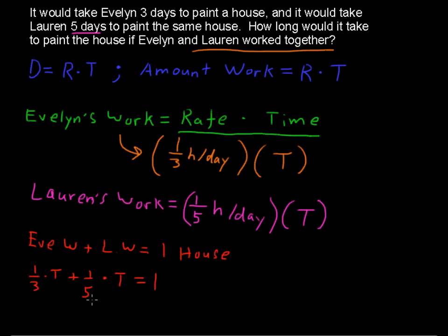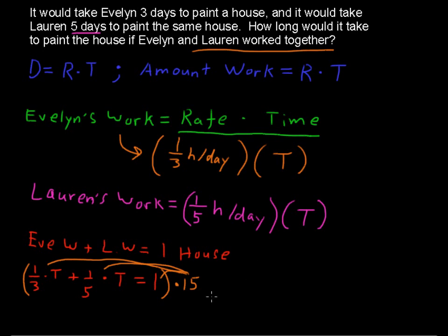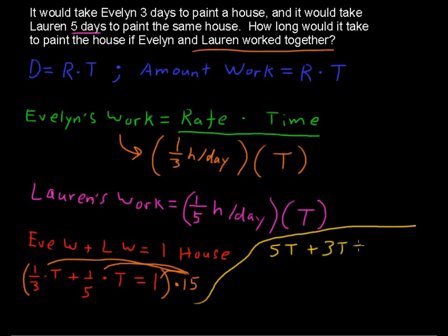Let's get rid of these fractions by multiplying through by the lowest common denominator. The lowest common denominator of 3 and 5 is 15, so I'm going to multiply everything by 15. One-third times 15 is 5, so I have 5t, plus one-fifth of 15 is 3, so 3t, equals 15.